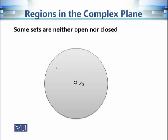There are sets which are neither open nor closed. One example is the punctured disk, where the center is not included but the boundary is included. This set is not open because the boundary points are not interior points, and a set is open only if every point is an interior point.